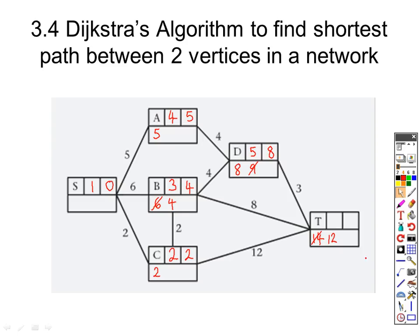Where can we go from d? There's only one place from d which is down to t, which will take me 3 more, giving me a total journey time of 11. 11 is the smallest out of 12 and 11, so we cross out the 12. Now we're only left with t, so t will be our sixth and last choice with a total journey time of 11. This means the shortest path from s to t is 11.